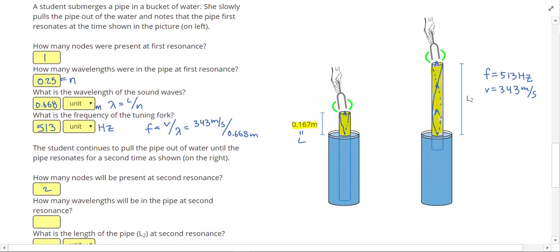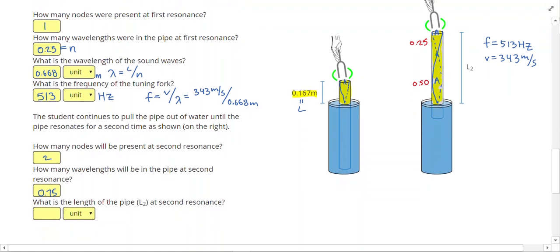How many wavelengths? From node to node is 0.5, and from node to antinode is 0.25. So I have 0.75 waves total. Since I still have the same wavelength of 0.668, I can find the new length of the pipe by taking the number of waves and multiplying it by the wavelength. So now I can do 0.668 times 0.75, and that gives me 0.501 meters.